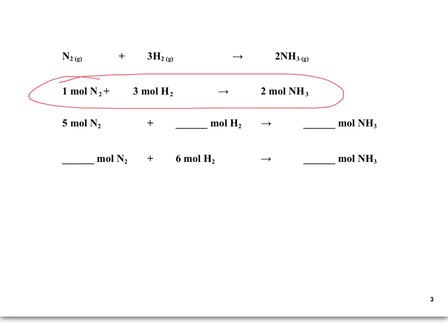But what if we didn't have one mole of nitrogen? What if we had five moles of nitrogen? We could use the ratio given by the coefficients to determine the number of moles of the other reactant and the product. To get from one to five, we multiply by five, so let's do that to all of our other coefficients. Three times five is 15, so we have 15 moles of hydrogen and 10 moles of ammonia for five moles of nitrogen.